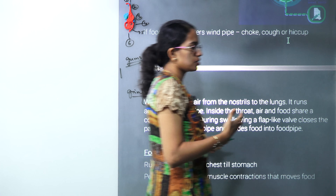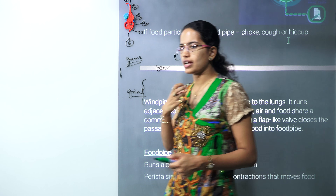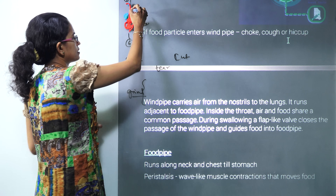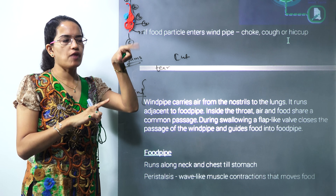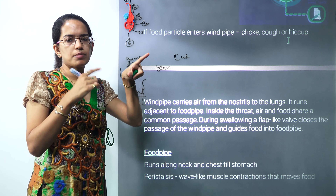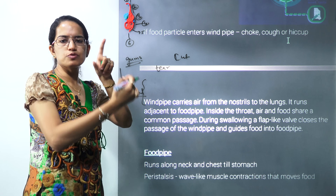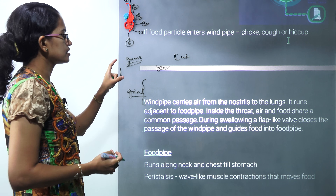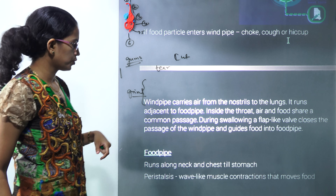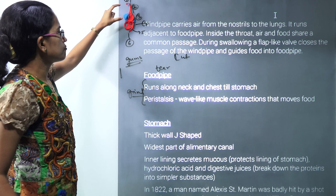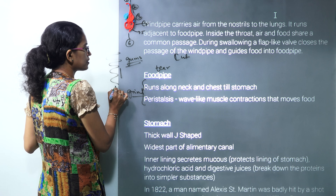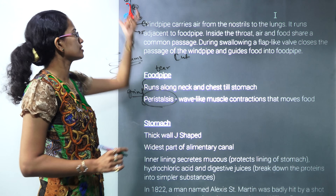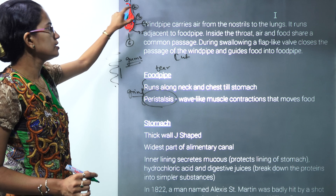Sometimes you might get hiccups while eating or food gets stuck. That's because the food pipe and the wind pipe have a common valve or opening. If there is a hiccup, food particles rather than going into the food pipe move into the wind pipe, causing choking, coughing, or hiccups. The food pipe is also known as the esophagus, and within it a wave-like movement called peristalsis takes place. These contractions move the food down into the stomach.